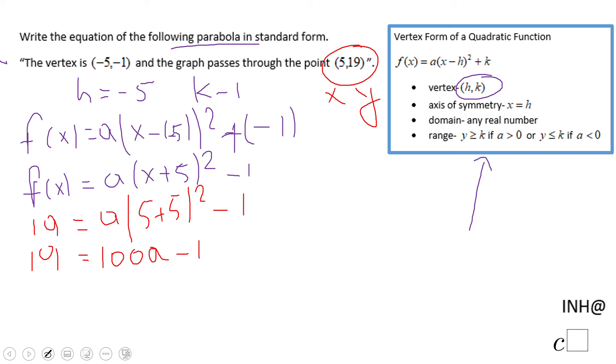Now we're going to add 1 to both sides, and we get 20 equals 100a. Divide by 100, and a will be 1/5.